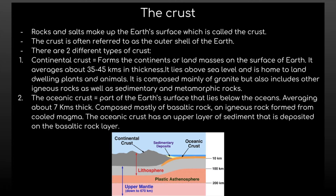The oceanic crust, also known as the seabed, is the part of the Earth's surface that lies below the oceans, averaging about 7 kilometers thick. It is composed mainly of basaltic rock, an igneous rock formed from cooled magma. The oceanic crust has an upper layer of sediment deposited on the basaltic rock layer.